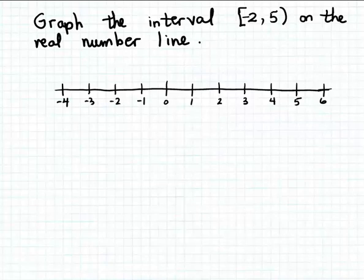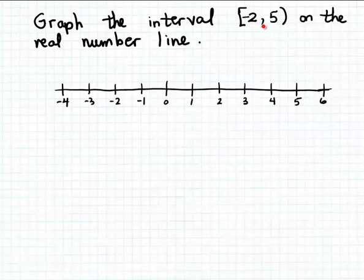In this example we are given a set that's written in interval notation and we want to graph that set on the real number line. Interval notation is just a convenient and compact way of indicating or writing down certain subsets of the set of real numbers. You are given two boundary values and the interval notation indicates the set of numbers that is between those two boundary values.